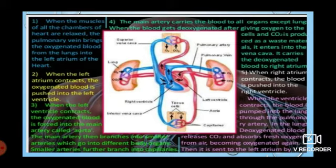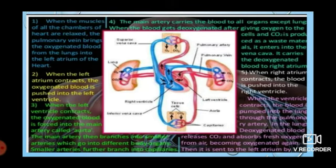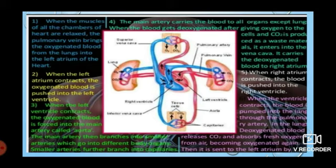The smaller arteries branch into capillaries. The main artery carries blood to all organs except the lungs. When the blood becomes deoxygenated, oxygen is given to the cells and carbon dioxide is produced. The deoxygenated blood is carried to the right atrium. When the right atrium contracts, the blood is pushed into the right ventricle. When the right ventricle contracts, the blood goes to the lungs via the pulmonary artery.